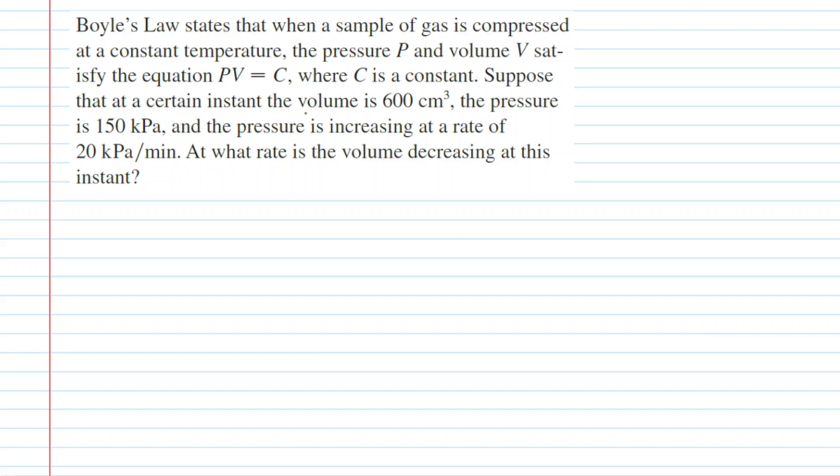We can begin solving this question by writing down the known values. So let's write down the fact that the volume is 600, the pressure is also given as 150, and then finally we have a rate of change.